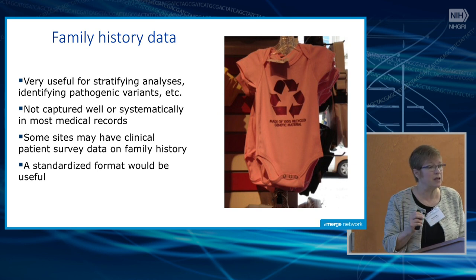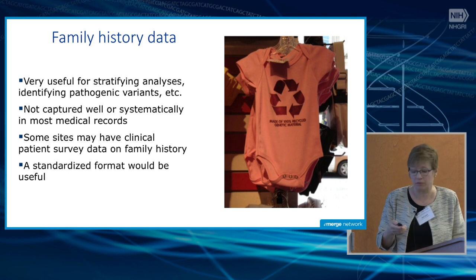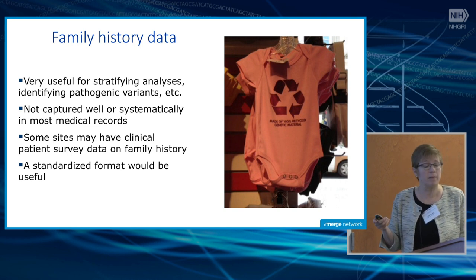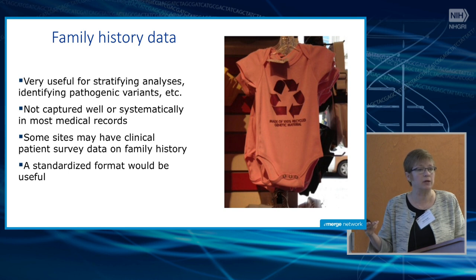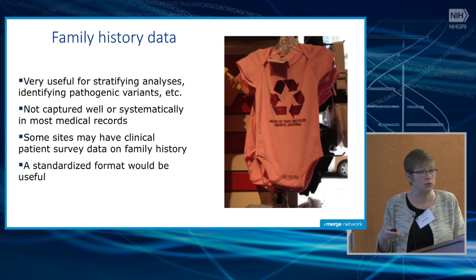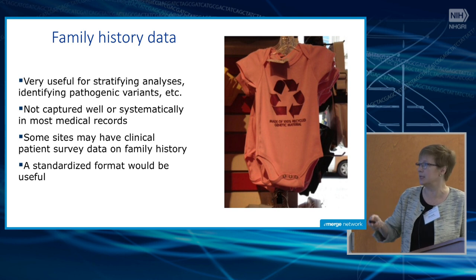Family history itself is not captured well in electronic health records — there's no standardized form, it's difficult to pull back out at most sites, and those who do have it electronically have it in different formats. A standardized format for family history across all of eMERGE where we're going back to participants would be very useful. Other things you could collect include apps for data collection or wearable technologies. We do have to keep in mind these are biorepository-based samples, and many people are lost to follow-up or deceased, especially in the older cohorts.